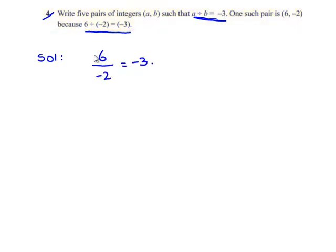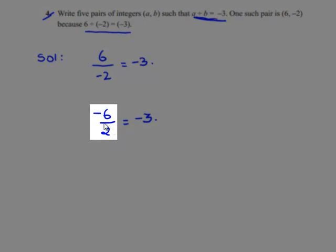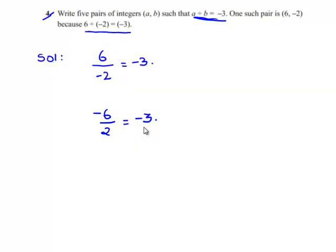This is because when two integers of opposite signs are divided, we always get a negative sign in the answer. We can also write it as: when negative 6 is divided by 2, we get negative 3. Here also the signs of the integers in the numerator and denominator are opposite, hence we get a negative sign. Therefore another example is negative 6 comma 2.